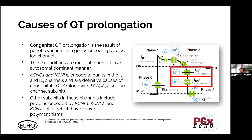Congenital QT prolongation results from genetic variants in genes encoding cardiac ion channels. Most of these conditions are very rare but are inherited in an autosomal dominant manner, so only one variant is needed to be symptomatic. There are essentially three genes identified as definitive causes of congenital long QT syndrome: KCNQ1 and KCNH2, which encode subunits in the IKR and IKS channels, are definitive causes.